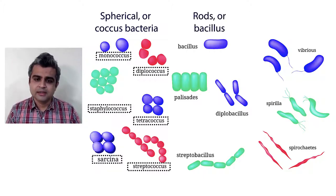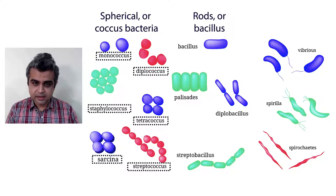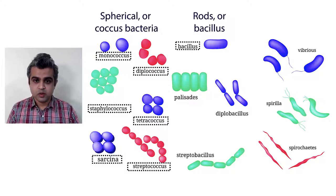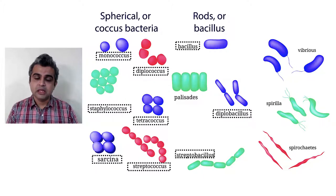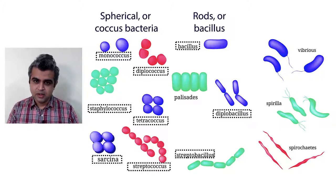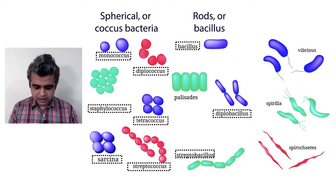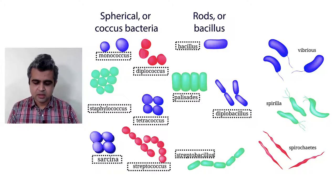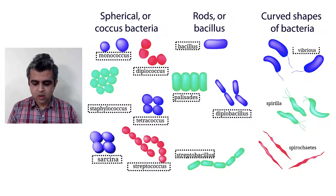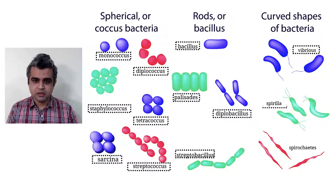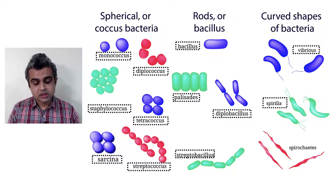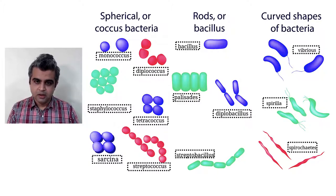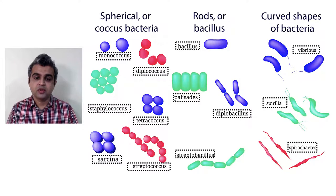Rod-shaped bacteria are called bacilli (singular: bacillus). Single-celled ones are bacillus; pairs are diplobacillus; twisted chains are streptobacillus; and those arranged like a fence are called palisade. Curved bacteria include vibrio (comma-shaped), spirilli (fixed spiral shape), and spirochetes (flexible spiral shape).